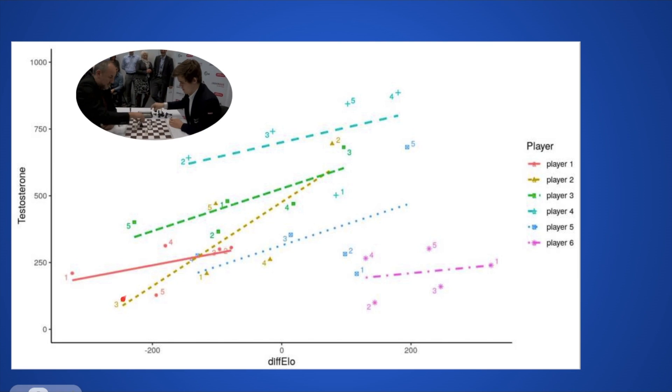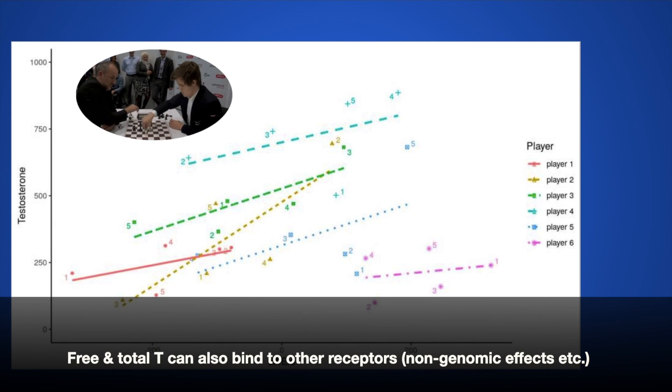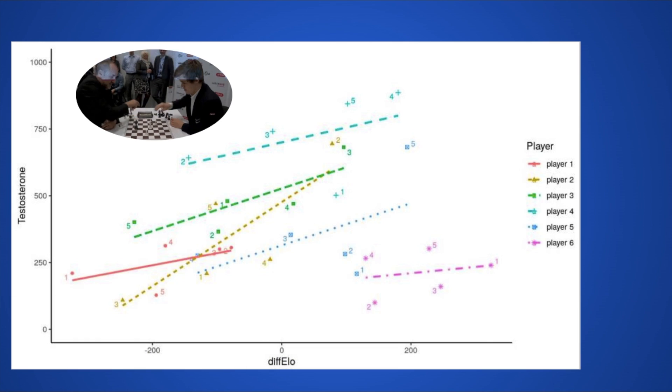As you can see here, his free testosterone levels started around the 90 range and that went up as much as almost 600 percent. By the way, these are free testosterone levels, so these are testosterone levels that can actually quickly bind to the androgen receptor and do what testosterone does. The other total testosterone also has a role, but overall free testosterone is significantly more important than total testosterone.